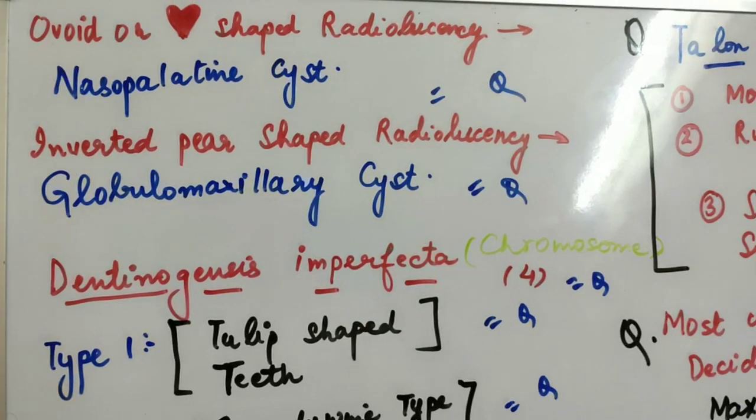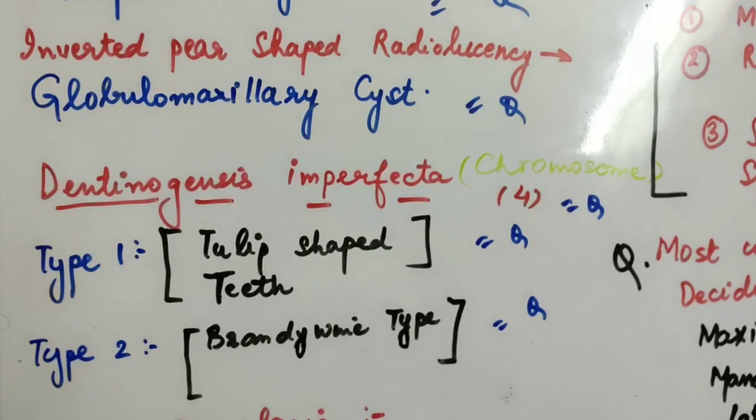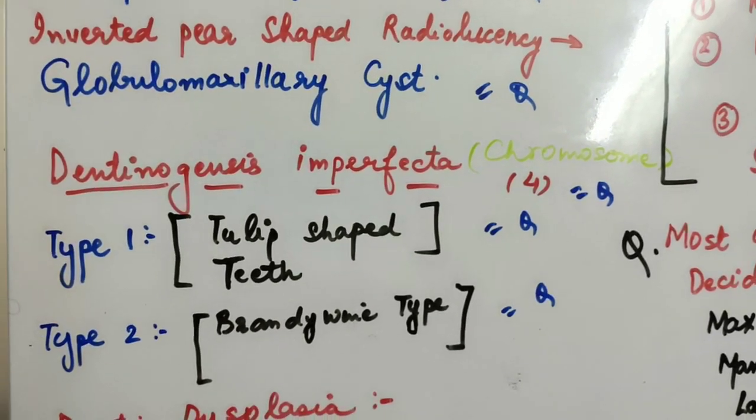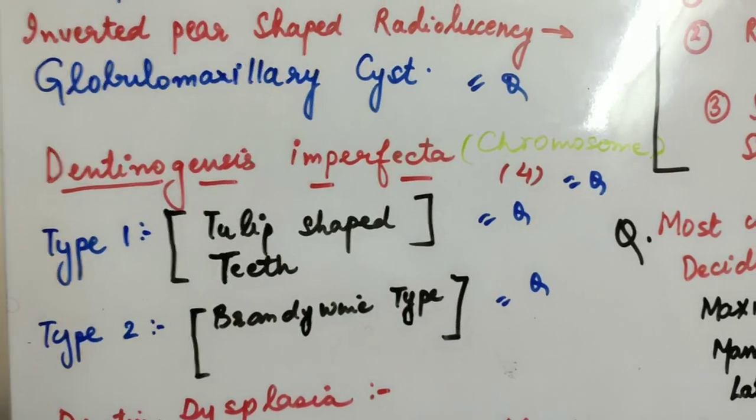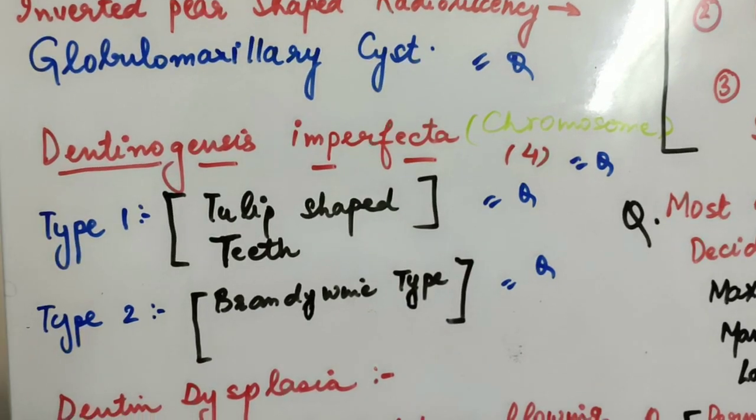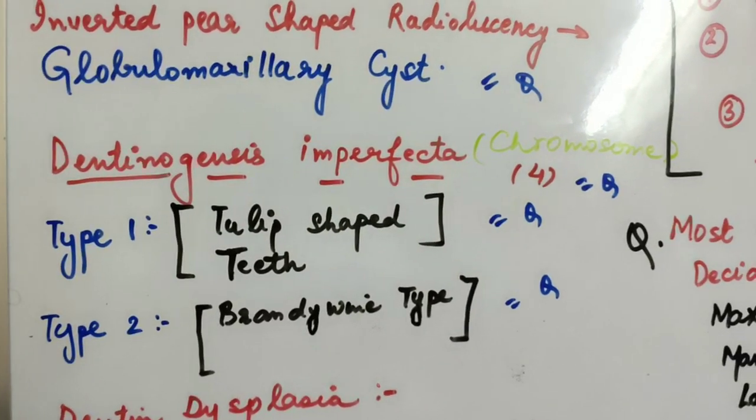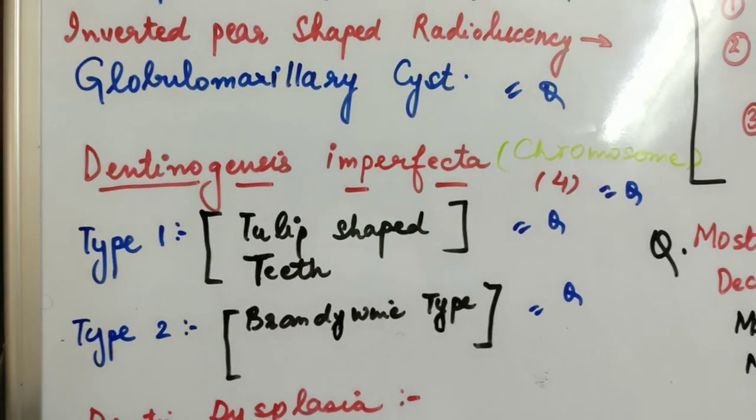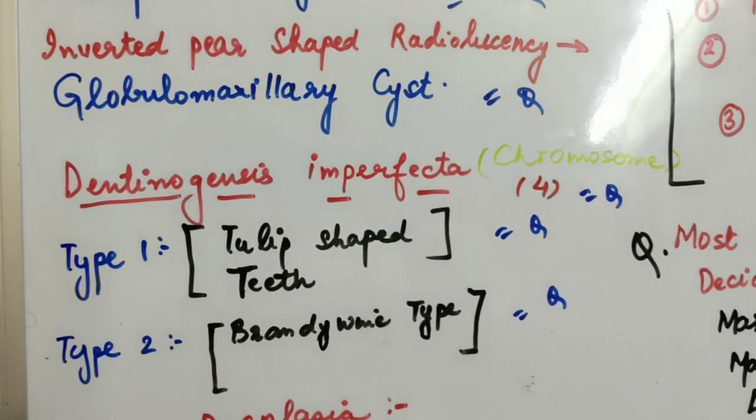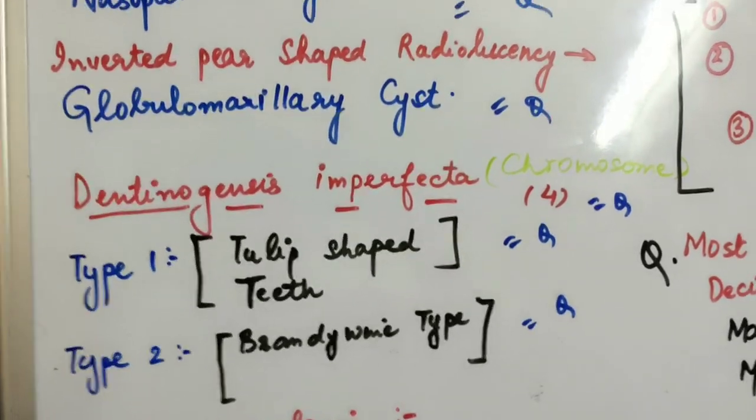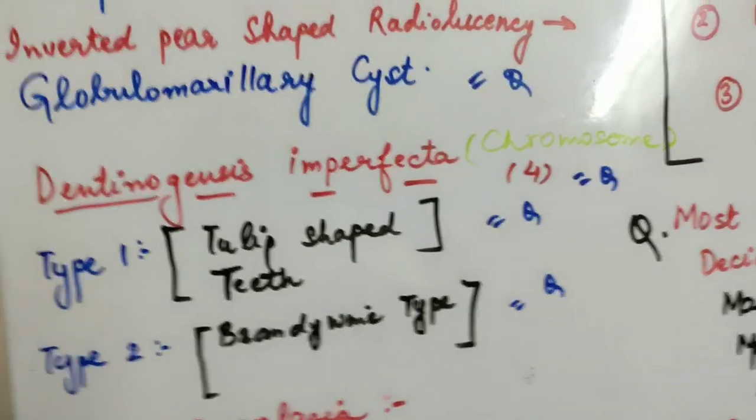Next question: dentinogenesis imperfecta. Two questions arise here. The first question is, with which chromosome is dentinogenesis imperfecta associated? In your repeated papers also, this same question has come five, six, seven, eight times. It is associated with chromosome number four. You have to remember this by heart.